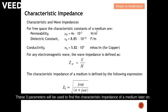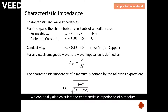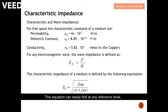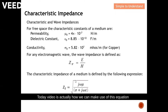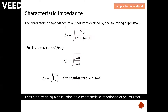As discussed earlier, for any electromagnetic wave, the wave impedance is defined here. The characteristic impedance is the ratio of the electric field over the magnetic field. We can use this to calculate the characteristic impedance of a medium, and I will revisit this equation again shortly.